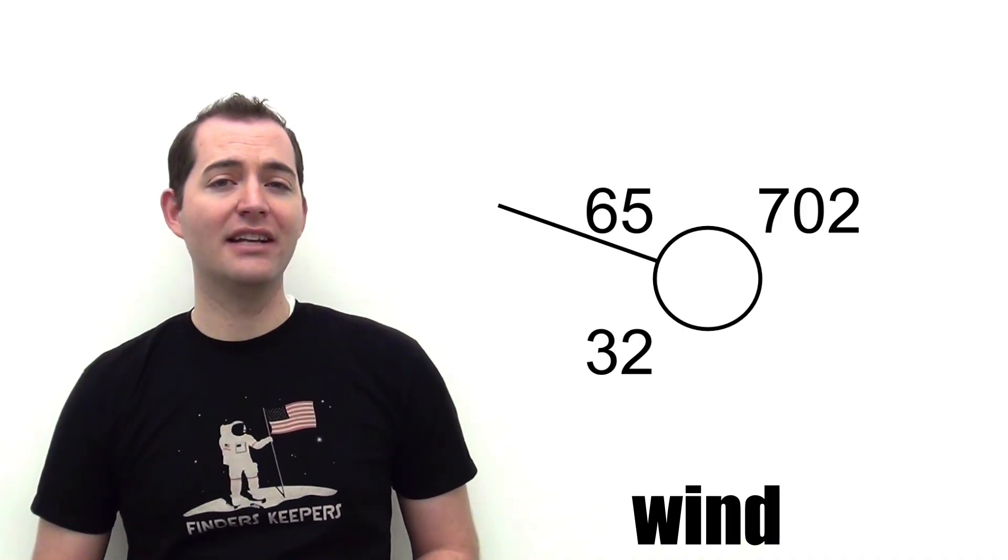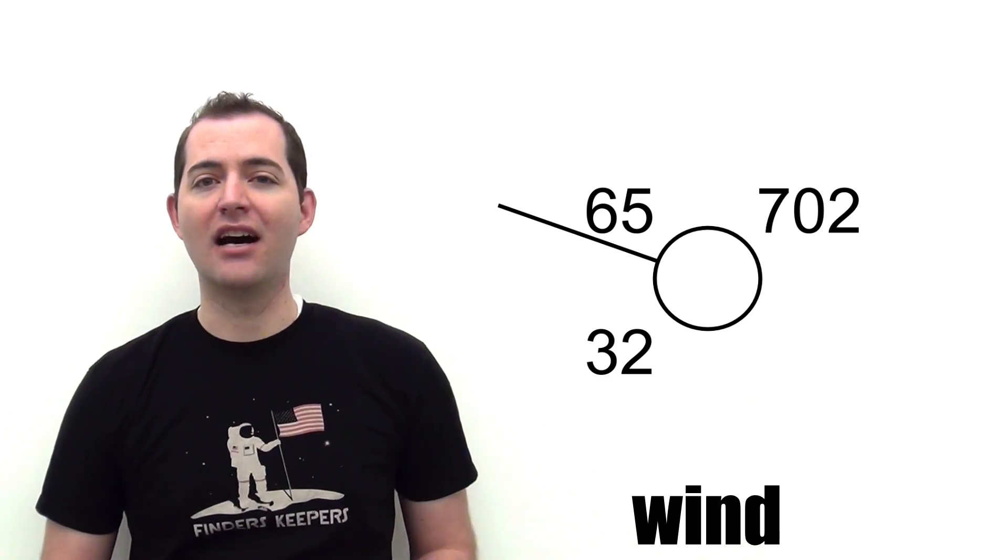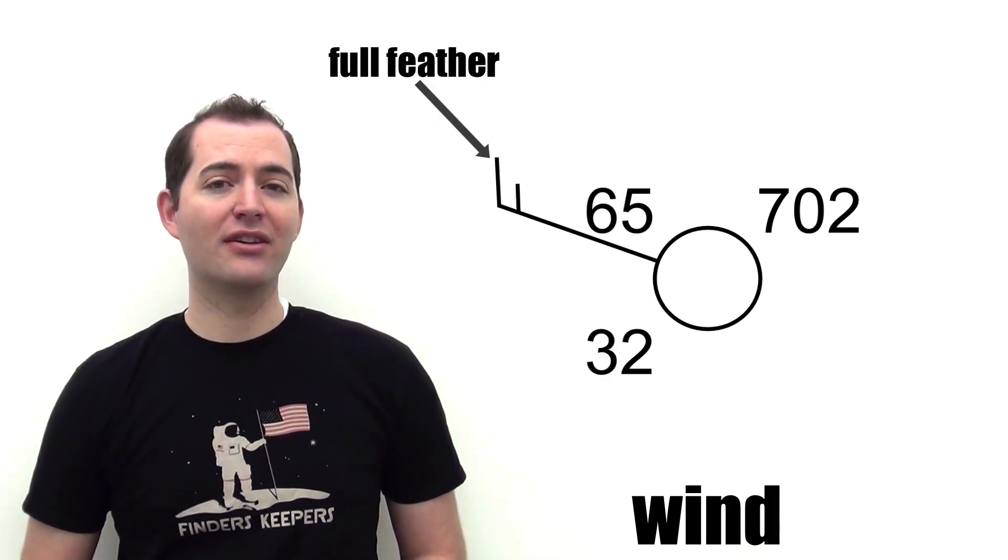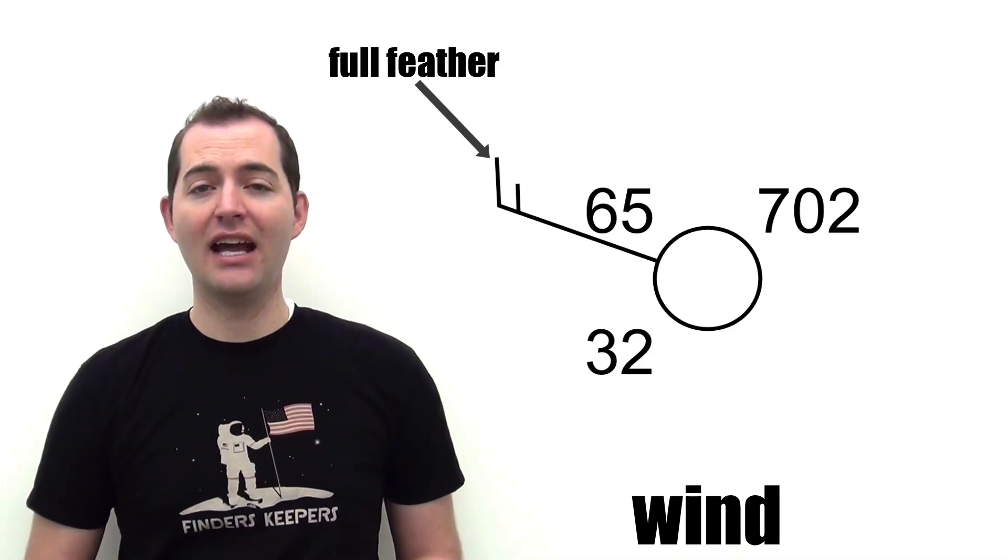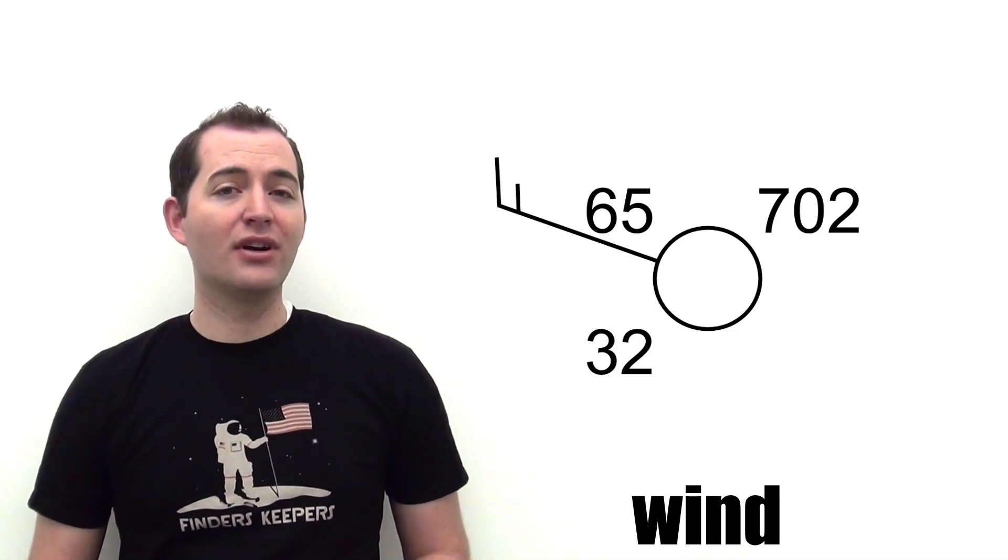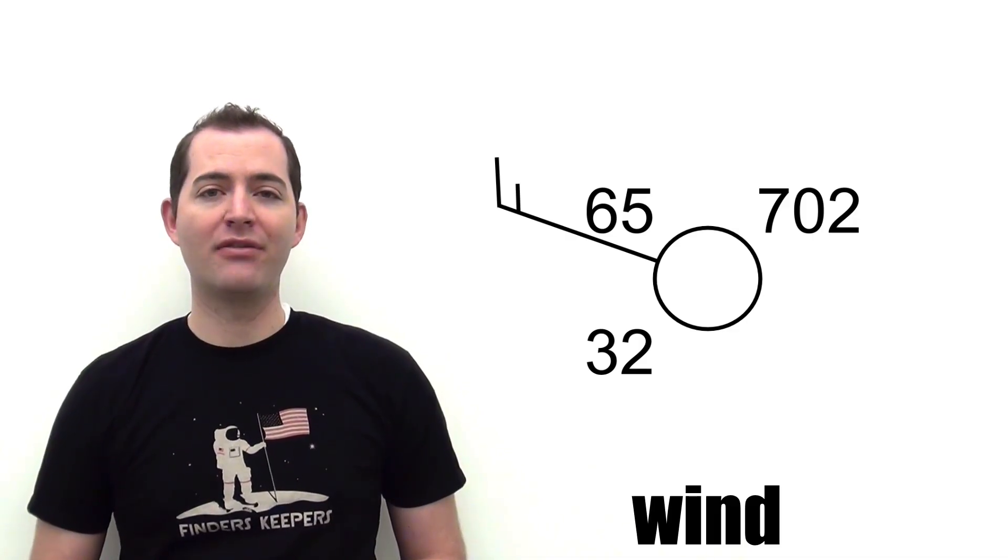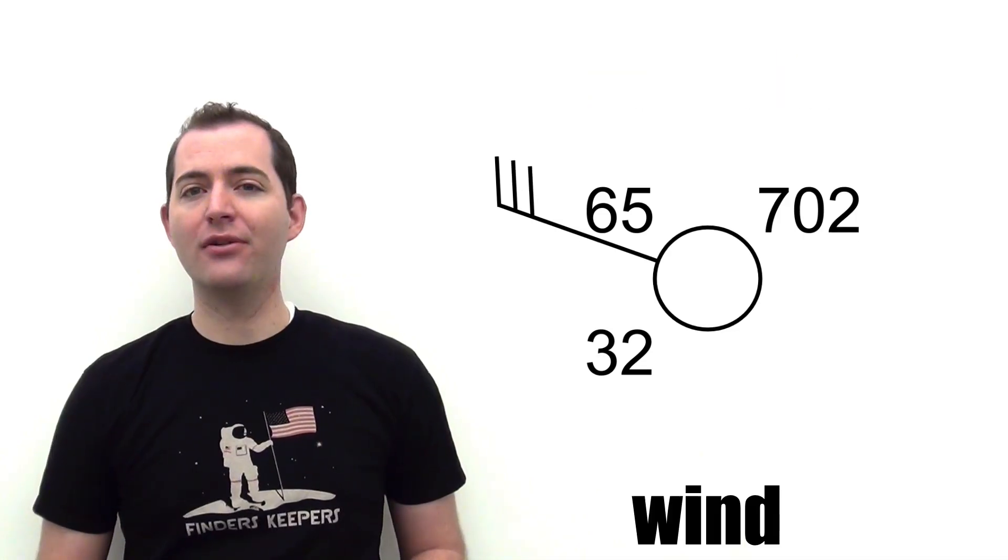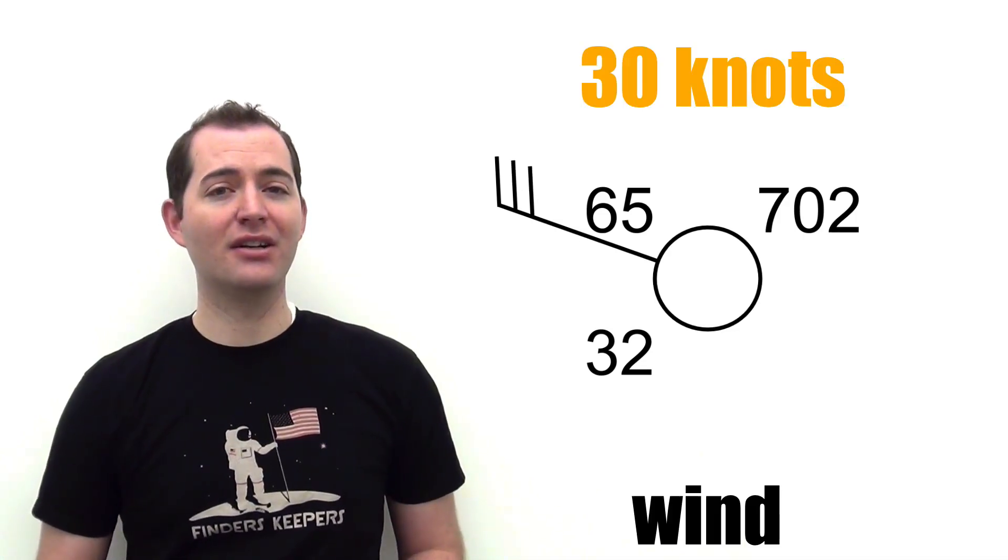Feathers are added to the end of the shaft to show wind speed in knots, which are nautical miles per hour. Each full feather represents 10 knots and each half feather represents 5 knots. For example, one full feather and one half feather would equal 15 knots, while three full feathers would represent 30 knots.